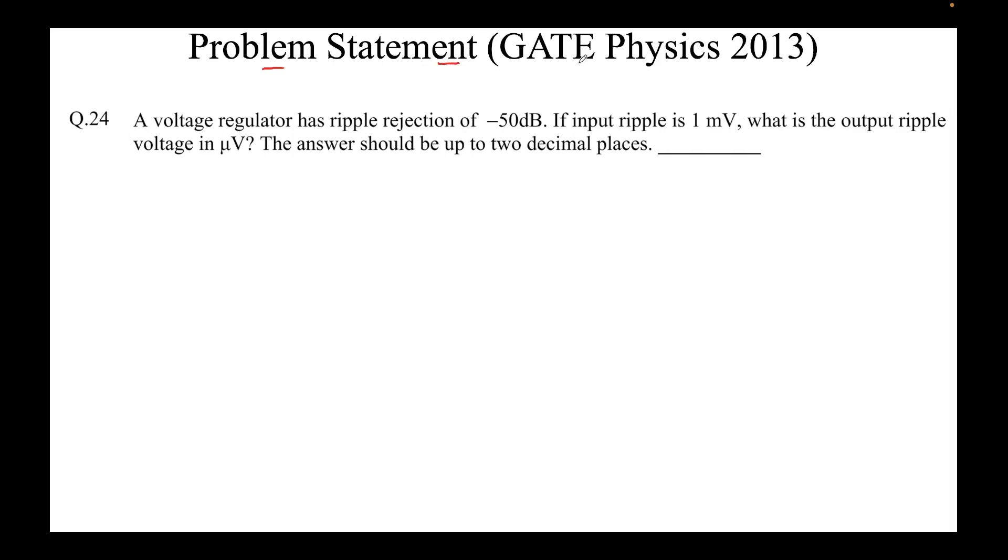The problem from GATE Physics 2013 paper reads as follows. A voltage regulator has ripple rejection of minus 50 dB. If the input ripple is 1 millivolt, what is the output ripple voltage in microvolts? The answer should be up to two decimal places. This is a numerical answer type question.